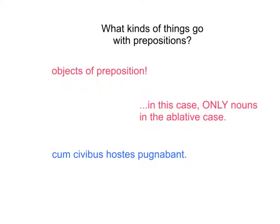But we also see that cum is followed by an ablative noun. This tells me that that's cum as a preposition, meaning 'with.' So if I were going to bracket, label, and translate, I would put this in parentheses. The subject is hostes, and pugnabant is the verb. This whole thing is going to mean 'the enemies were fighting with the citizens.'